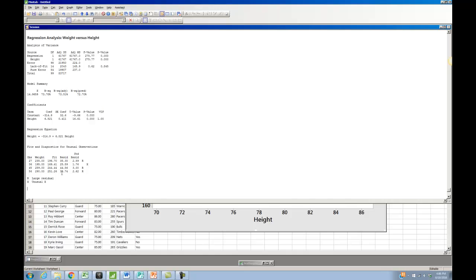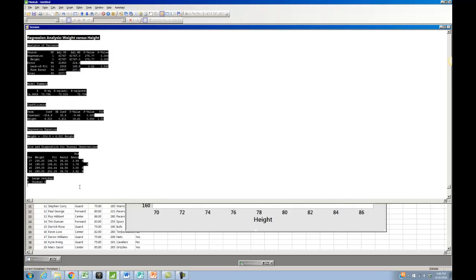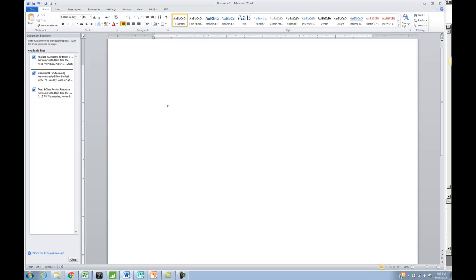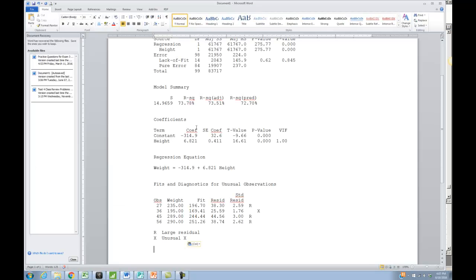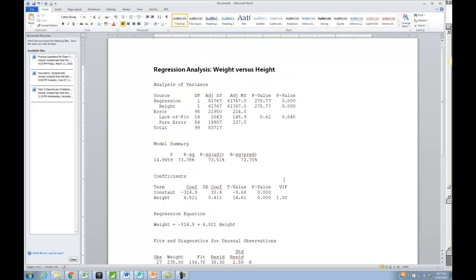And I get all this output in my session window. Now, I want to make this just a little bit bigger on my screen, so I'm going to cut and paste this into Word. This is a similar process that you would use if you were doing this in your homework and wanted to cut and paste the output. So I'm going to highlight all of it, hit Control-C, come over here to Word, and hit Control-V. That will give me everything here. So this is the output that I received in Minitab.